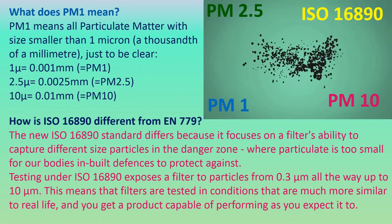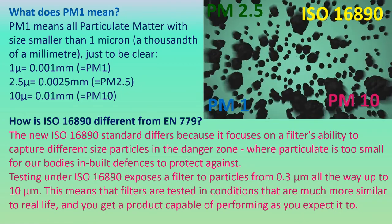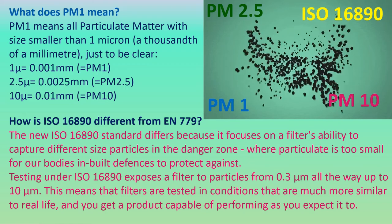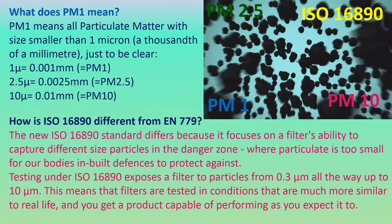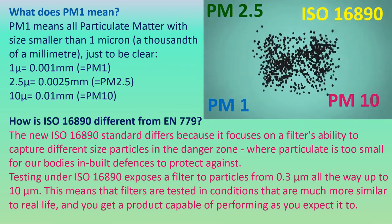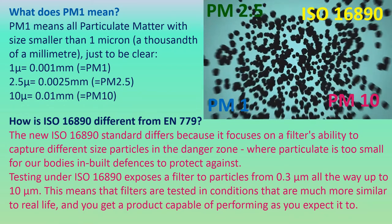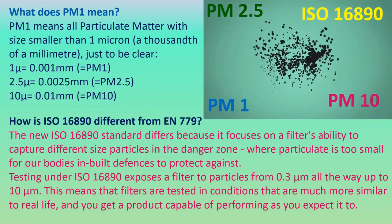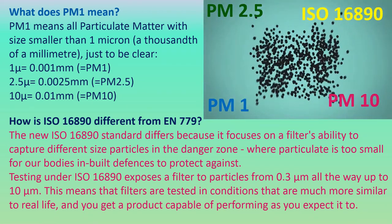How is ISO 16890 different from the EN 779? The new ISO 16890 standard differs because it focuses on a filter's ability to capture different size particles in the danger zone, where particulate is too small for our body's inbuilt defenses to protect against. Testing under ISO 16890 exposes a filter to particles from 0.3 micron all the way up to 10 micron. This means filters are tested in conditions much more similar to real life, and you get a product capable of performing as you expect it to.